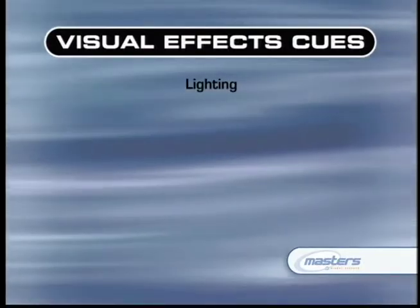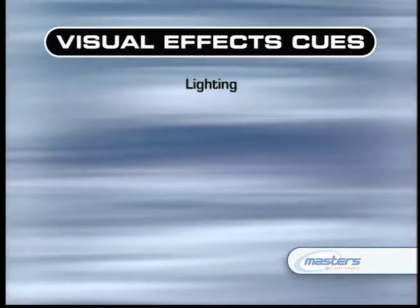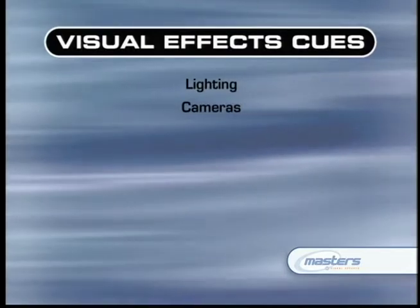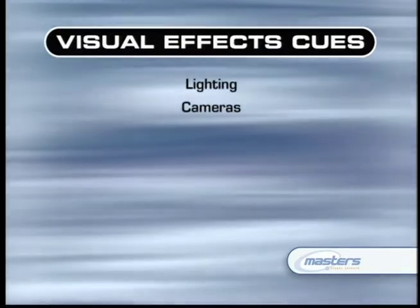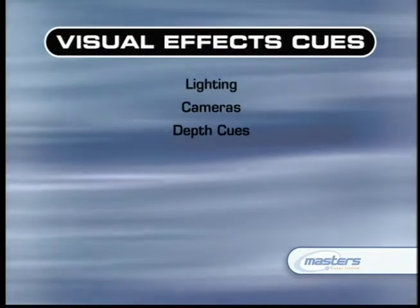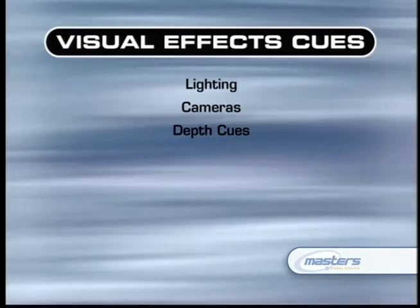We're going to talk about these different visual effects cues and break them down into three specific categories. The first category is the lighting in the scene — by far the most important and probably the most difficult. The second is related to the camera and its artifacts. And the last is what's happening with the distance and depth relationships between objects, and how they interrelate to give a sense of a 3D scene even though we're looking at a flat image.